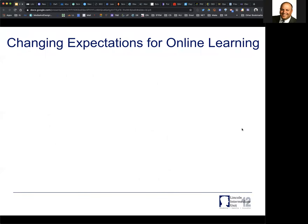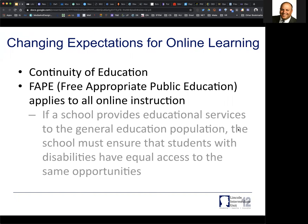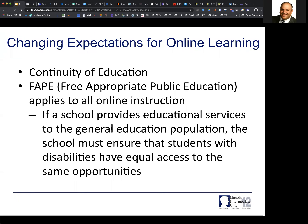A couple of things about the changing expectations for online learning. What we're trying to do is what we call continuity of education — the idea is that free appropriate education extends to all. If a school provides educational services to the general population, they need to ensure that they have information for everybody. All of these content sources are going to be online, and we need to think about how we're going to get some of these to students that don't have online access.